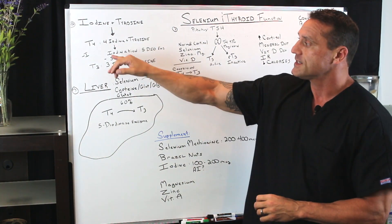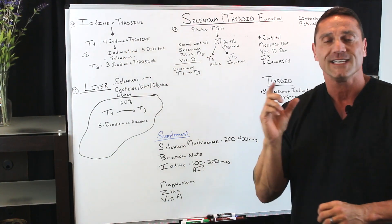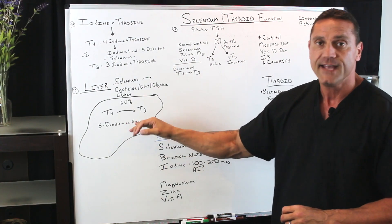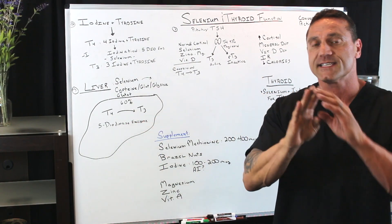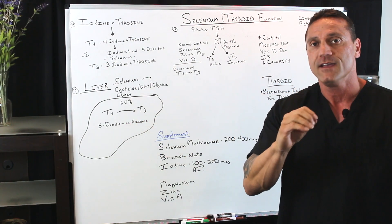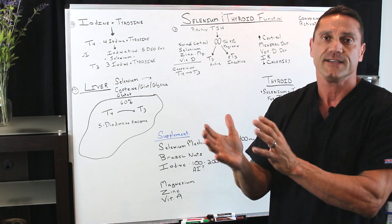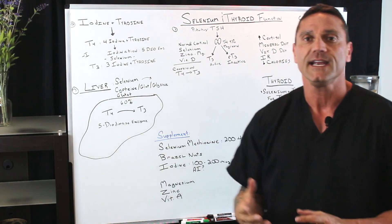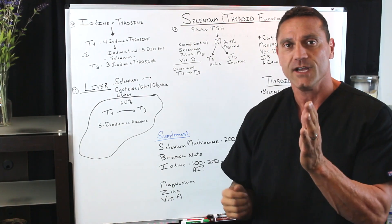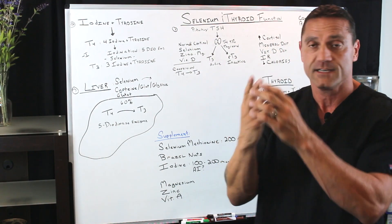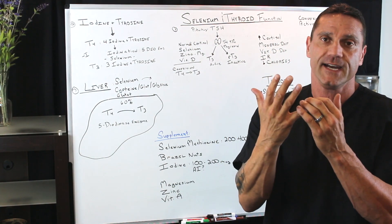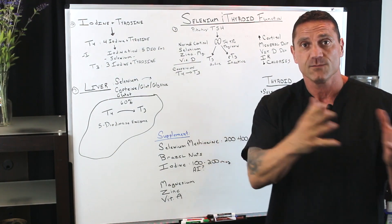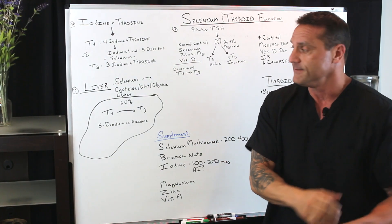In that process, iodination involves an enzyme called the 5-deiodinase enzyme, which helps cleave off that iodine molecule. What fuels that enzyme is selenium. So if you're low in selenium, the cleavage of that one molecule of iodine is reduced — this is why the conversion factor could be affected.